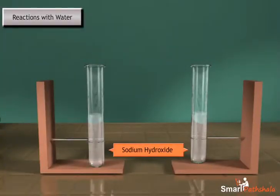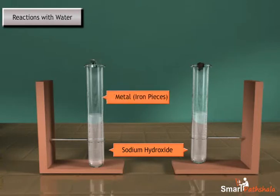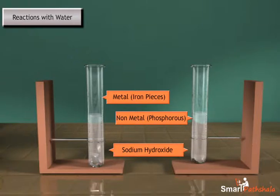Take an acid solution in two different test tubes and add a small piece of metal in one test tube and a piece of non-metal in the other test tube.